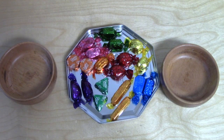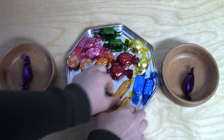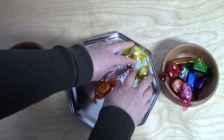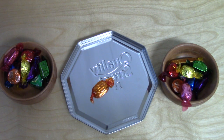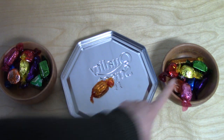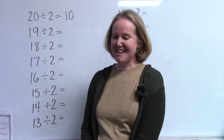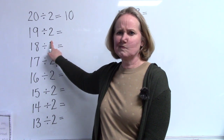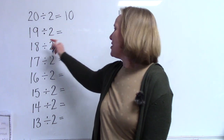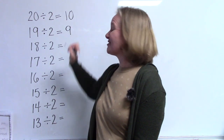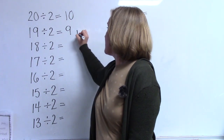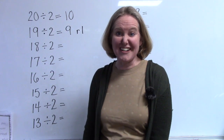I have nineteen candies in my bowl and we're going to divide those by two. We have one, two, three, four, five, six, seven, eight, nine in each bowl — with one left over. Nine with a one remaining. We just tried to divide nineteen by two. It didn't go evenly, did it? We were able to have groups of nine but there was still one left over, and that is a remainder of one.